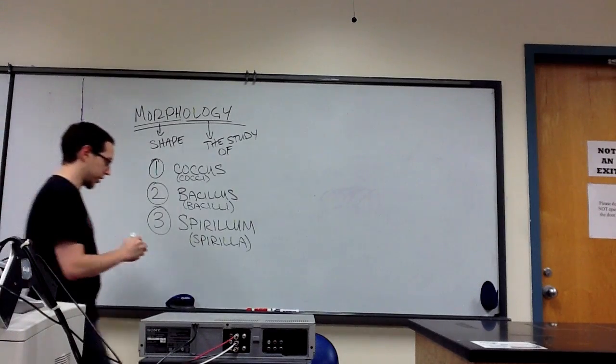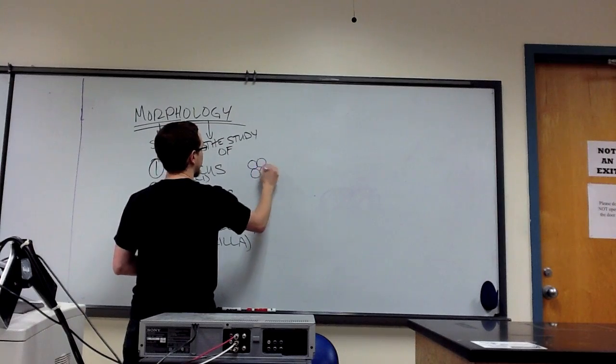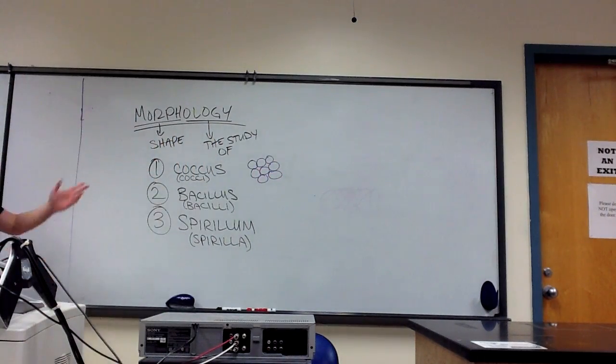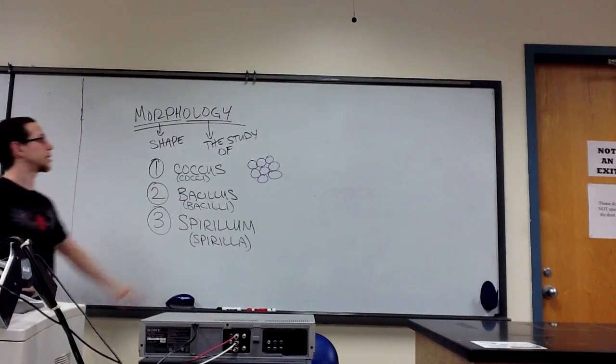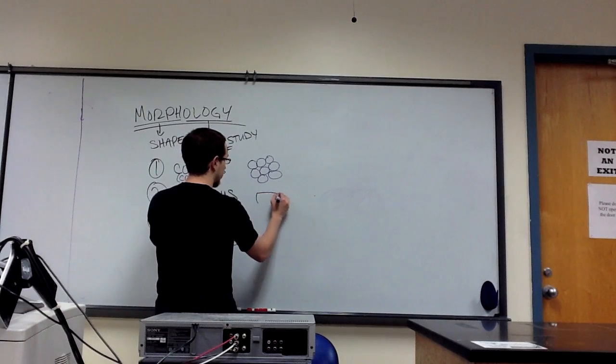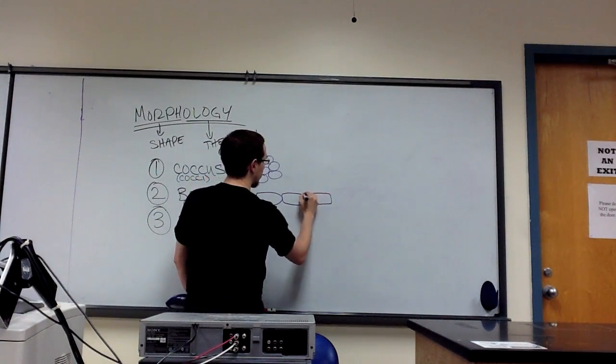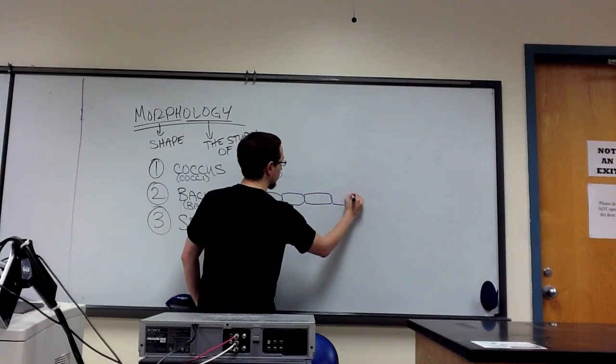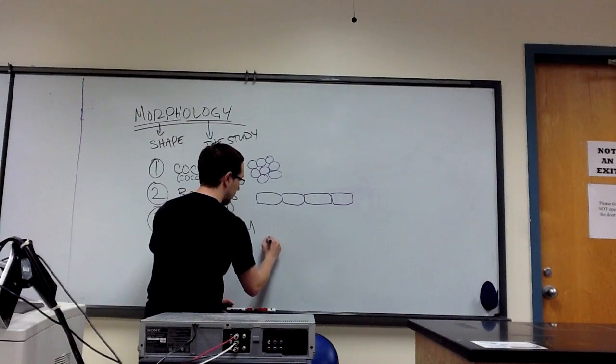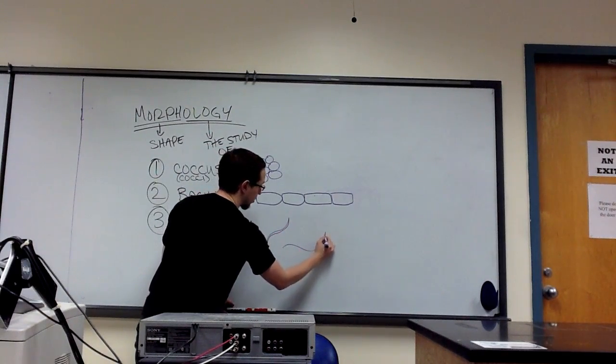And here's what each looks like. Here is what a cluster of cells that would be classified as coccus would look like. Cocci, I guess, since there are many cells. So this would be cocci. Bacilli typically looks something like this. And spirilla kind of look like that.